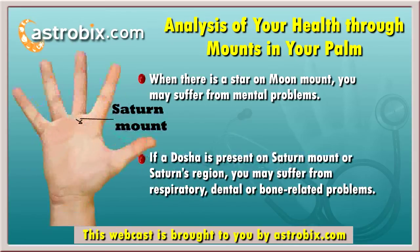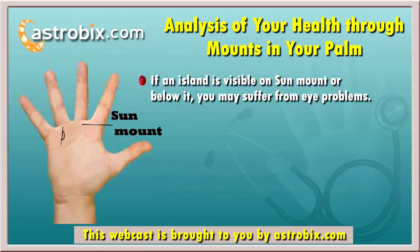When a dosha is present on the Saturn mount or Saturn's region in your palm, you may suffer from respiratory, dental, and bone-related problems. If an island is clearly visible on the sun mount or just below it, you may suffer from eye problems.